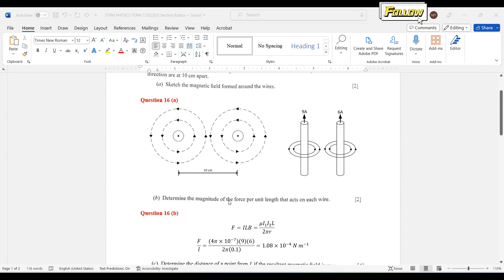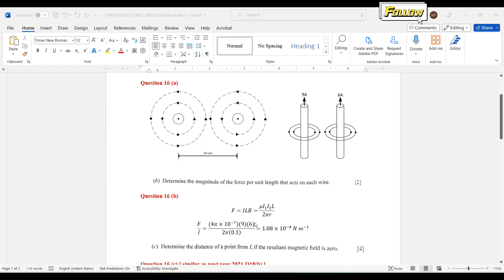The next question is to determine the magnitude of the force per unit length on each wire. We have learned about the formula and how to derive it. We start with the force equal to ILB, where B is the magnetic field produced by a straight wire, μ₀i/2πr from Ampere's law.